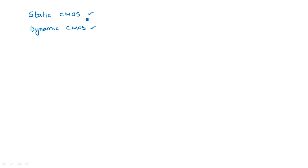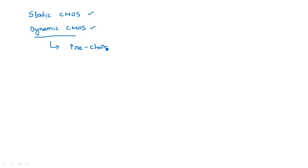In the dynamic CMOS design, a clock signal is applied to the PMOS transistor and the same clock signal is applied to the NMOS transistor. When the clock signal is zero, the PMOS transistor comes into the ON state. There are two types of operations or modes in dynamic CMOS: the first is pre-charge mode and the second is evaluation mode.